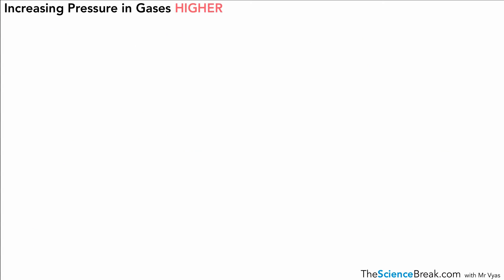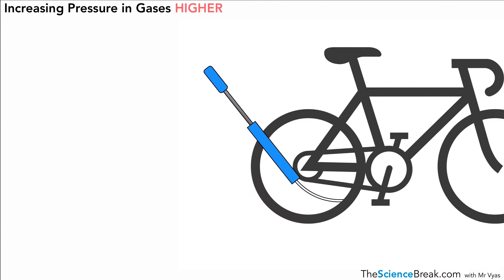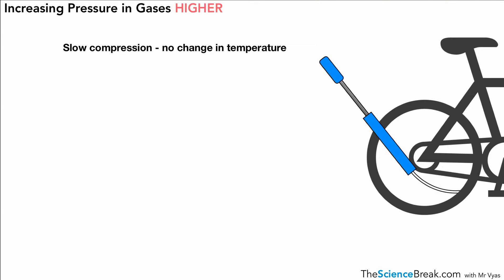The next topic is for higher tier: how increasing pressure affects temperature. A common example is a bicycle pump. If we push air slowly, there's no temperature rise. But with rapid compression, we get a temperature rise. This is important: work is done on the gas by a force. The person pushing down is doing work, which means energy is transferred to the gas inside the tire.